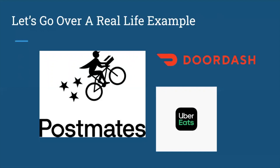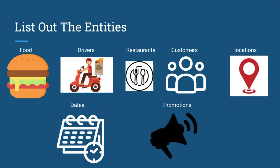Now let's look at some of the entities you could have thought of. You might have thought of food and delivery drivers — those are two obvious things in the workflow. You're also going to need restaurants, customers, and locations. Dates is kind of a default — if you've worked in data warehousing, you generally have some sort of dimensional date table. Promotions is another option; you might want to include ads. Another thing not included here is transportation — cars can get tricky because more than one person could end up using the same car.